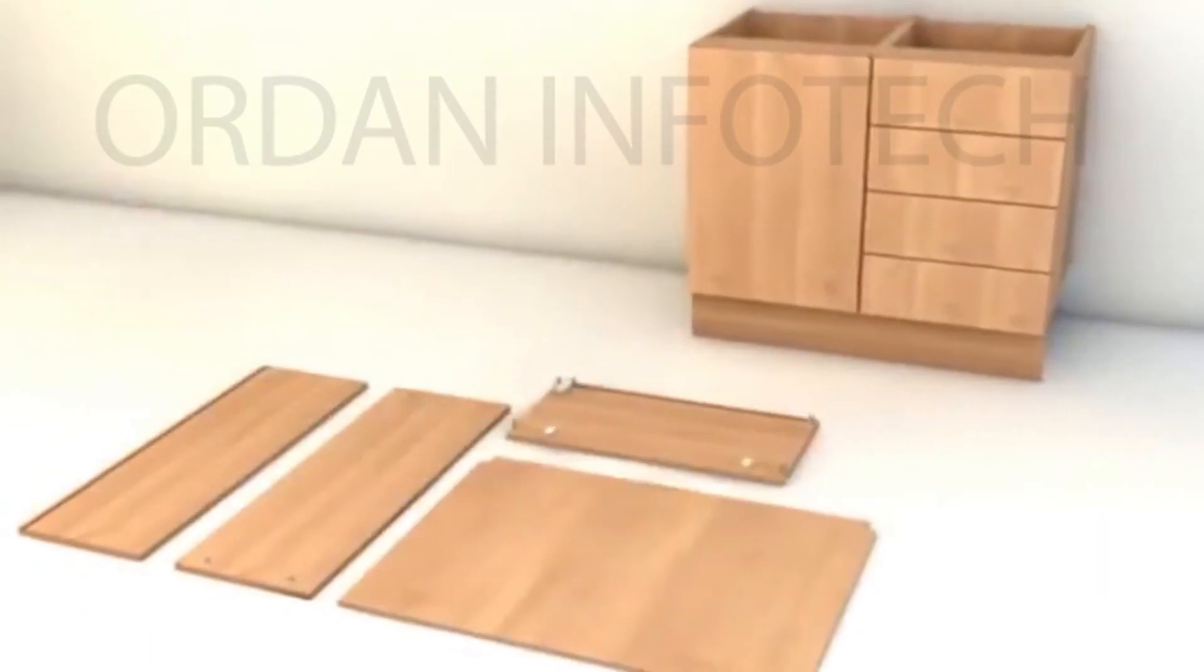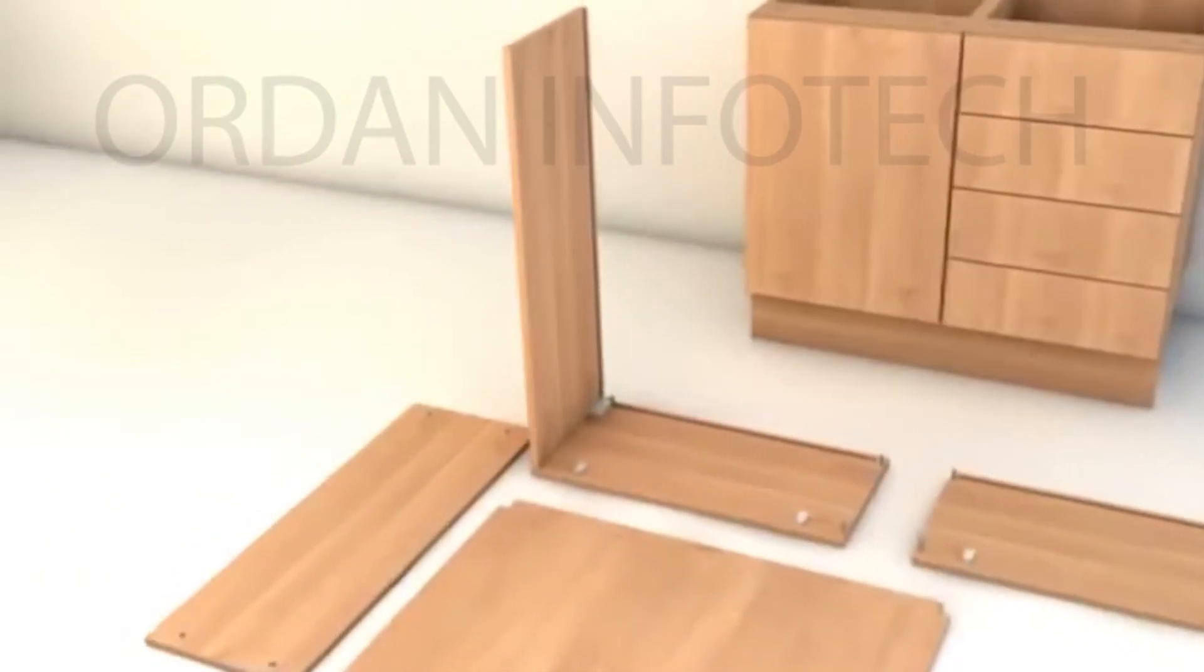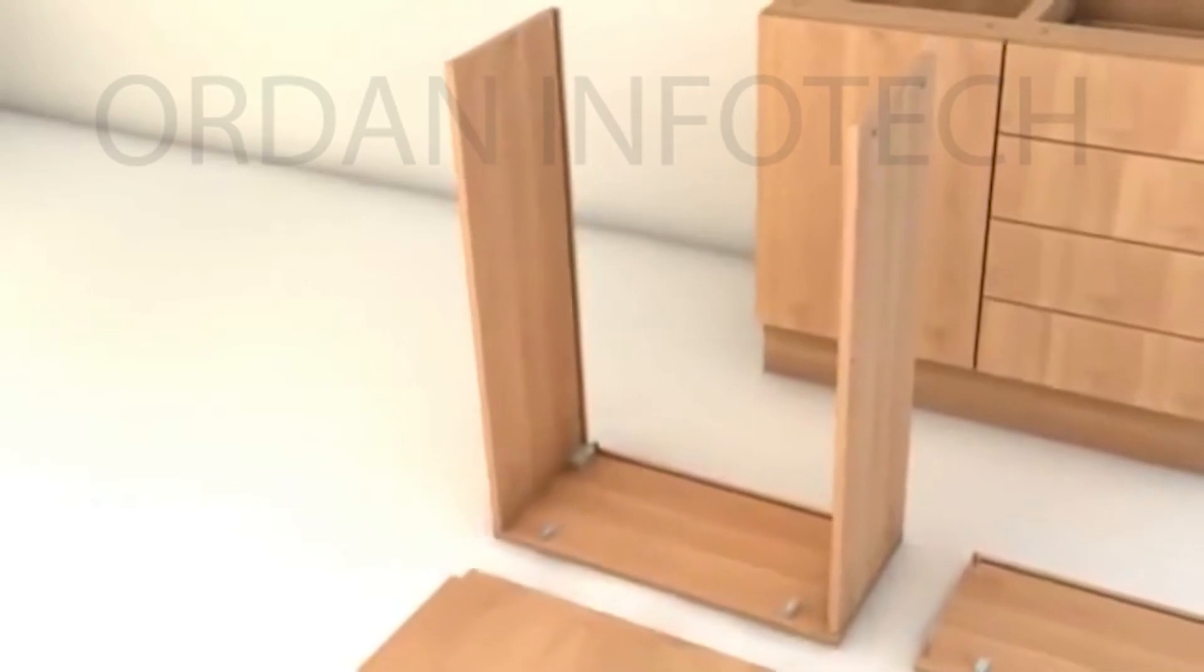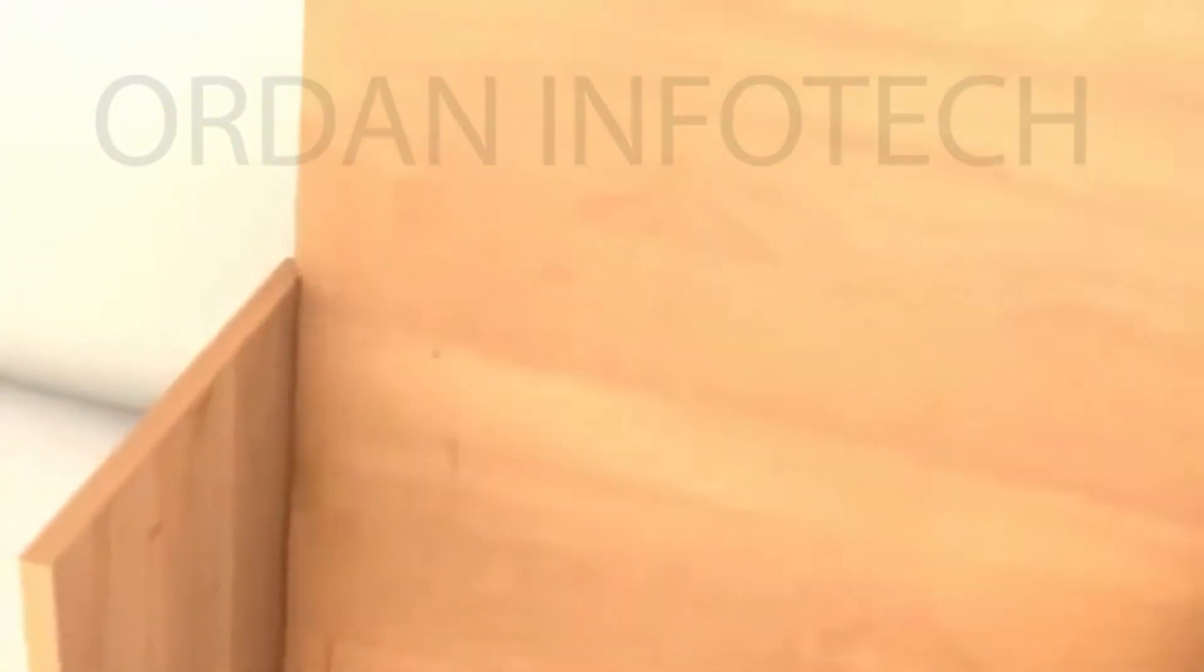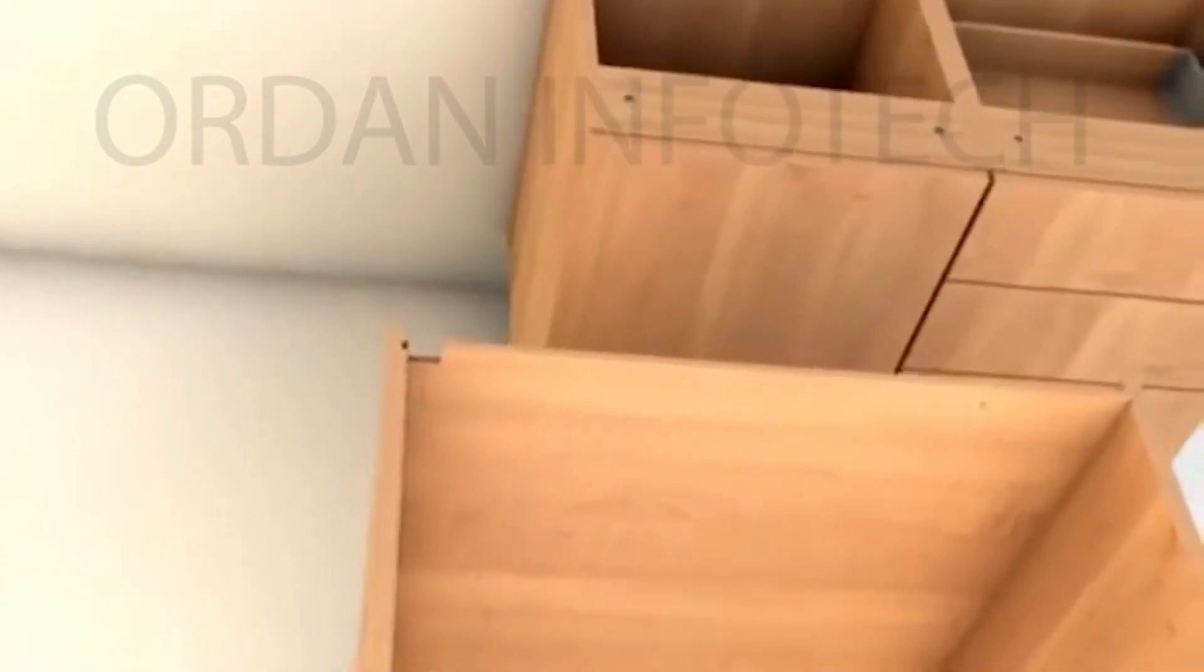Wall units are constructed with the same cam pin and dowel method as the base units. However, for ease of handling, they have a 9mm coordinating back and a 14mm void. To ensure stability and reliability of the back, it is fitted into a manufactured groove around the full perimeter of the unit.